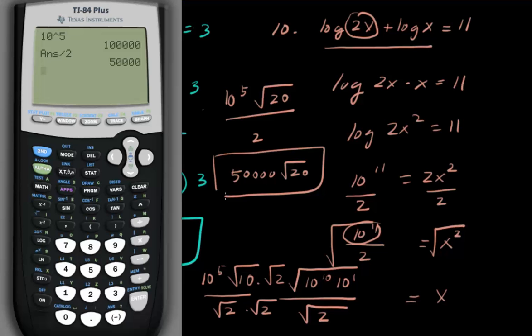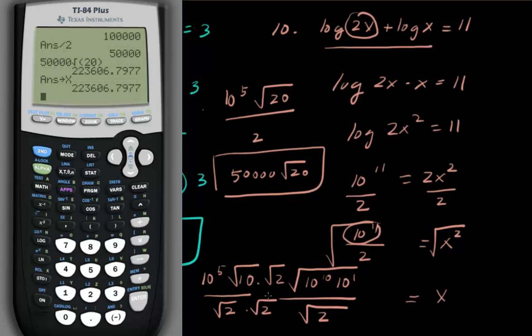Wow, that became a more difficult problem than I thought. Let's go ahead and do 50,000 square root of 20. Let's check our answer. Let's store that as x. And log of 2x plus log of x should be 11. Voila.